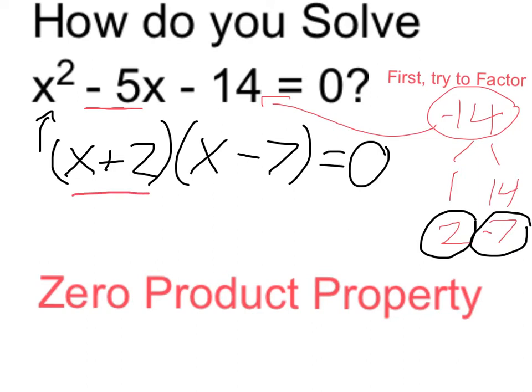Namely, either the x plus 2 must equal 0, or x minus 7 equals 0. If x plus 2 equals 0, when x itself is negative 2. Negative 2 plus 2 equals 0, so make the whole thing 0.